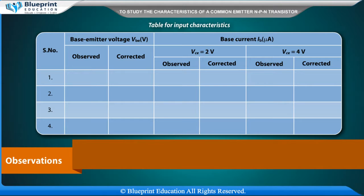Base emitter voltage VBE (volt) — observed, corrected. Base current IB (micro-ampere). VCE is equal to 2 volt — observed, corrected. VCE is equal to 4 volt — observed, corrected.